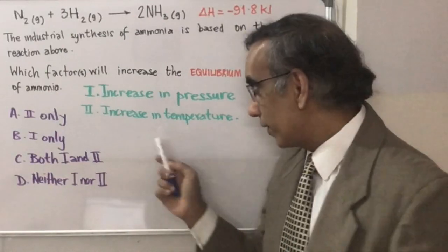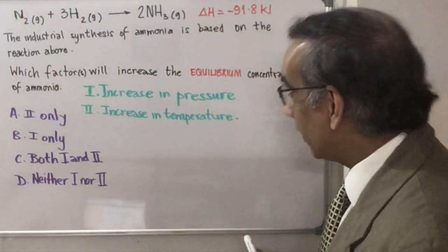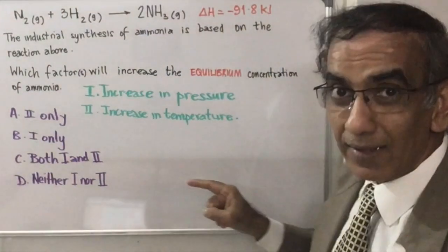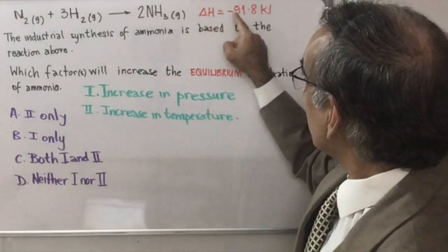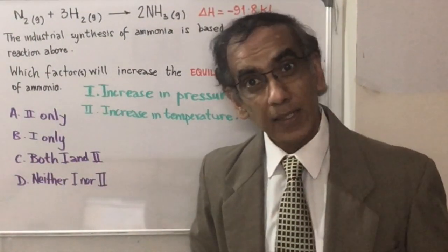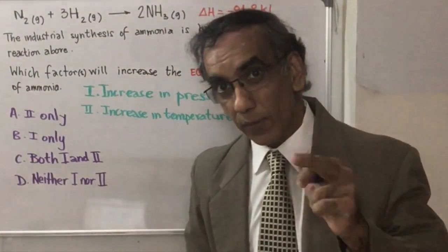Let's begin with the second one first: increase in temperature. The Haber process is an exothermic reaction. You can tell that because delta H is negative 91.8 kilojoules. Once delta H is negative, you know you have an exothermic process.